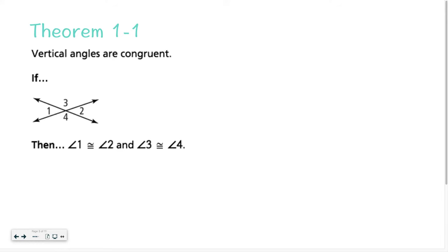You need to remember what a vertical angle is. A vertical angle is any time you see two lines make an X — it's the angles that are opposite each other. So angles 3 and 4 are considered vertical angles, on top and bottom of each other. But something that people forget is that angles 1 and 2 are also considered vertical angles because they have that same relationship of being on opposite sides of the X formed by the lines. It's important not only to identify vertical angles, but to know that they are congruent.